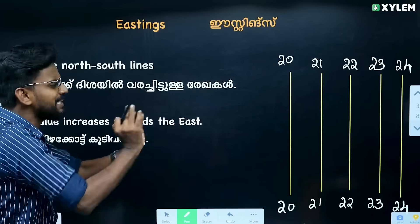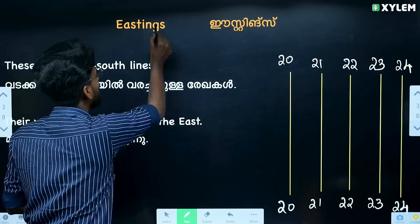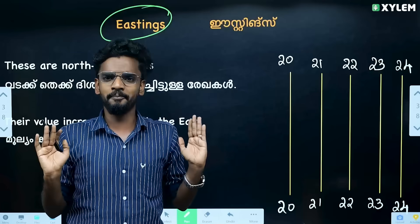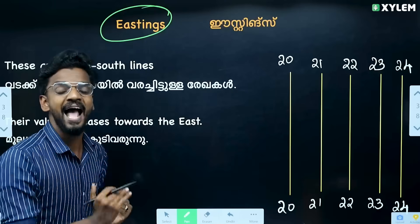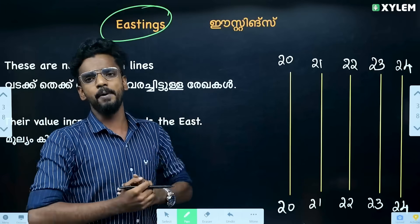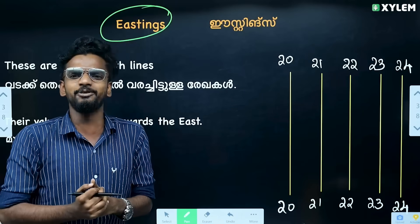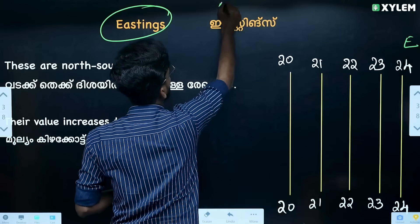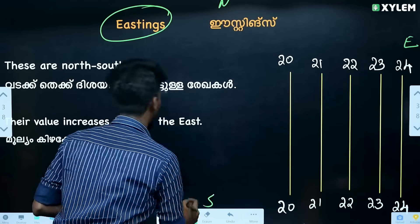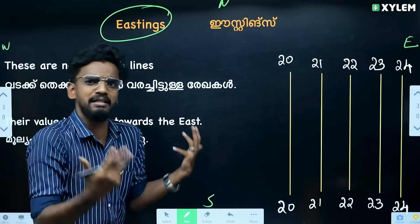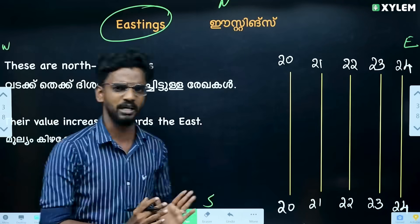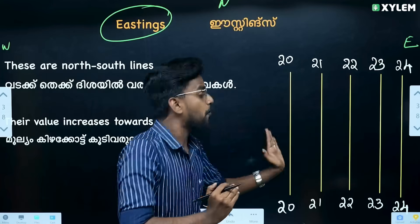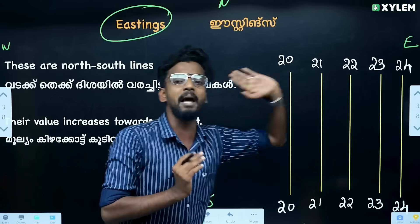Then we have two things: one is Eastings and the other is Northings. Eastings refers to the lines going east. This is the East, this is North, this is South, this is West. Today we are looking at Eastings — the lines and numbers going in the east direction.